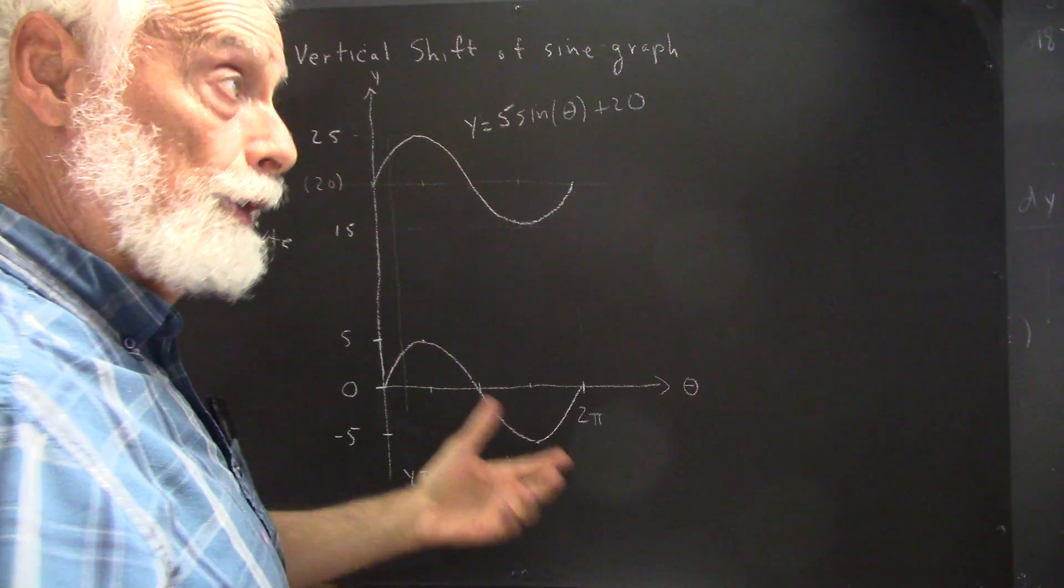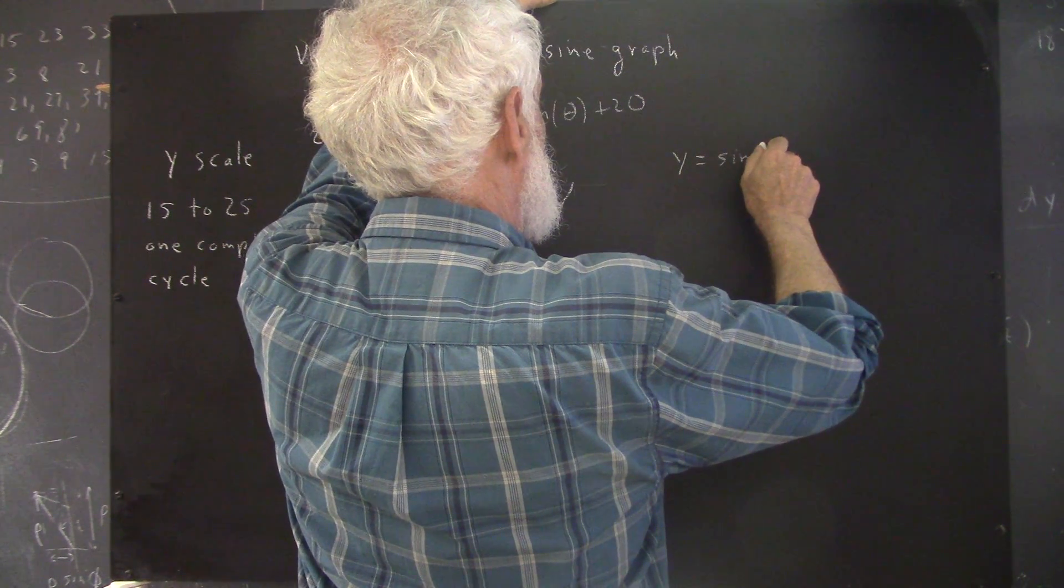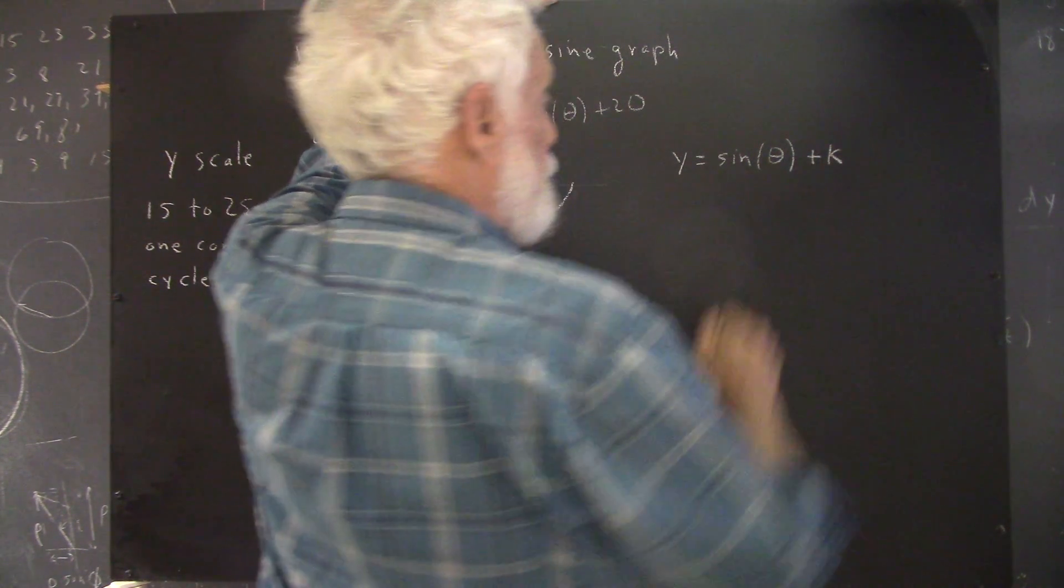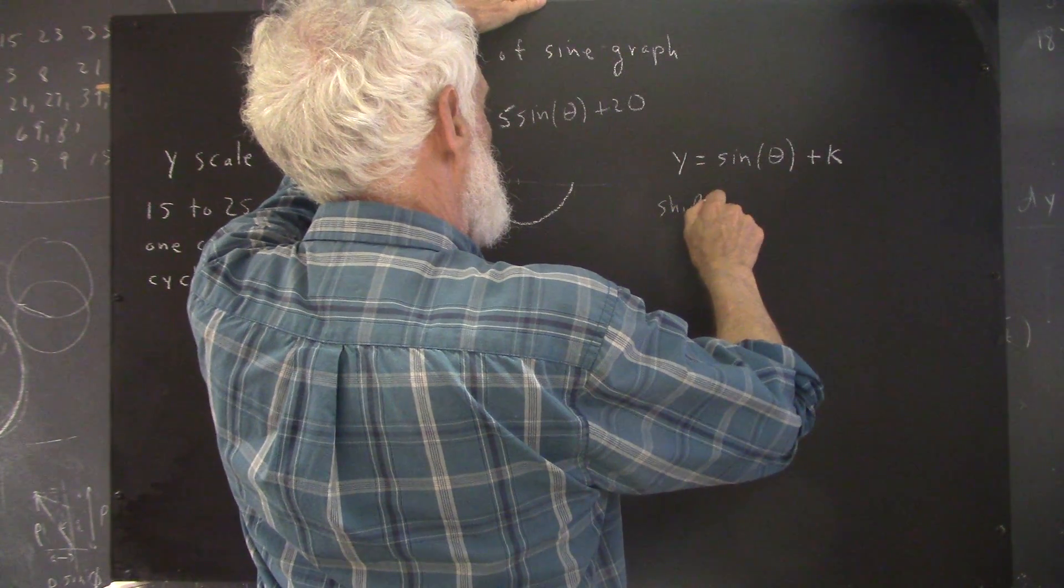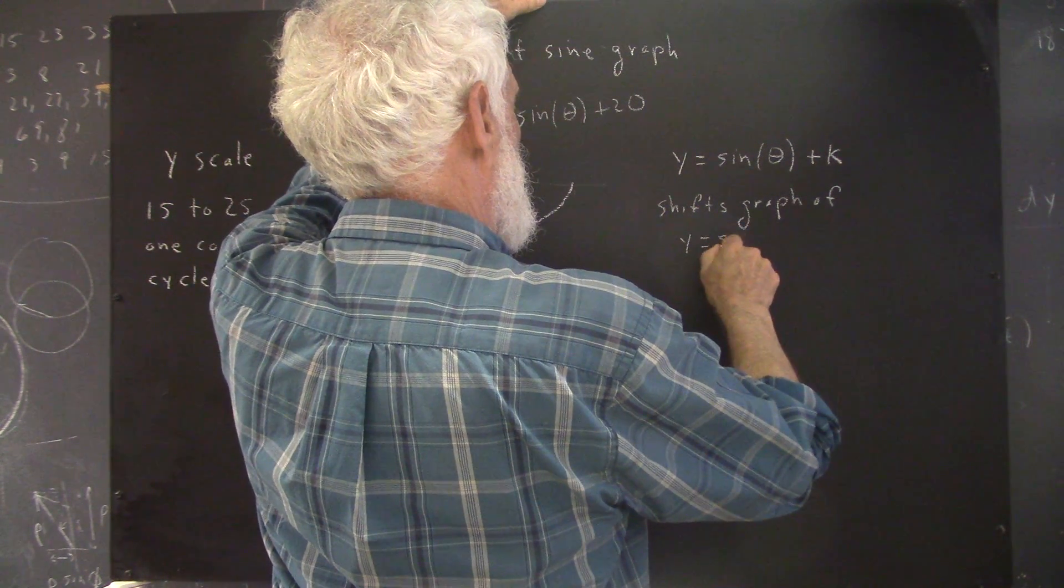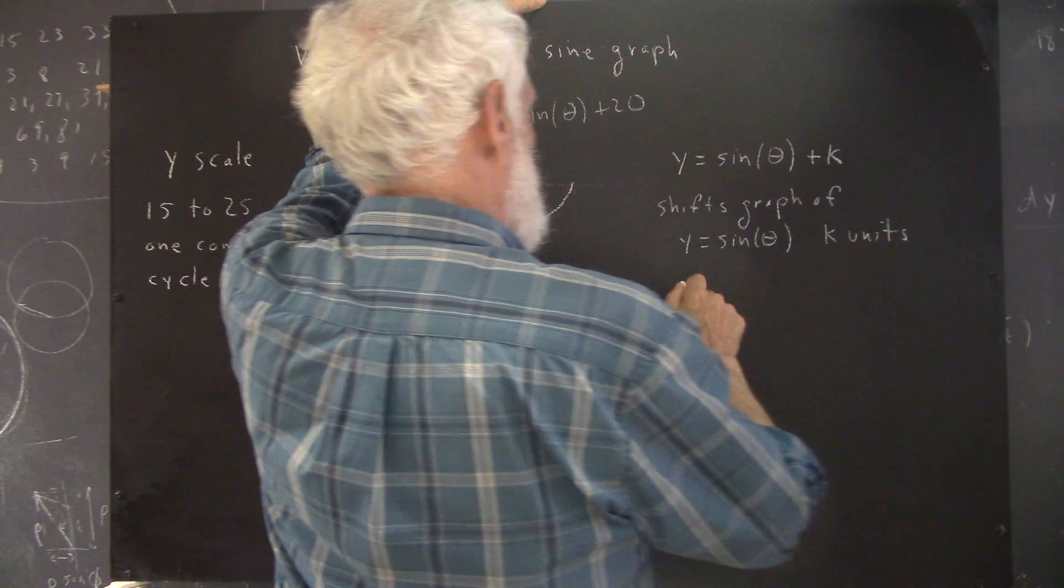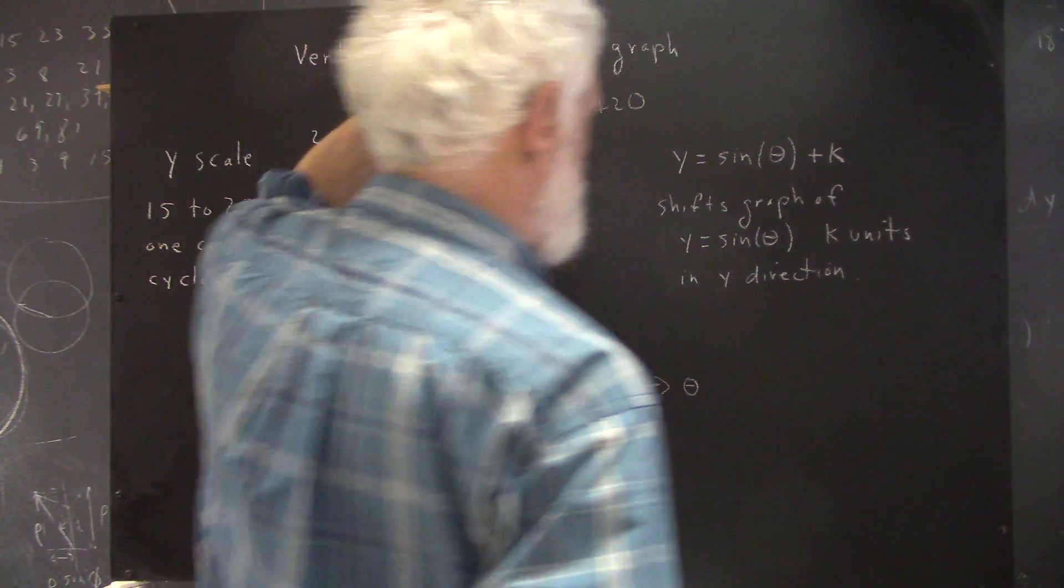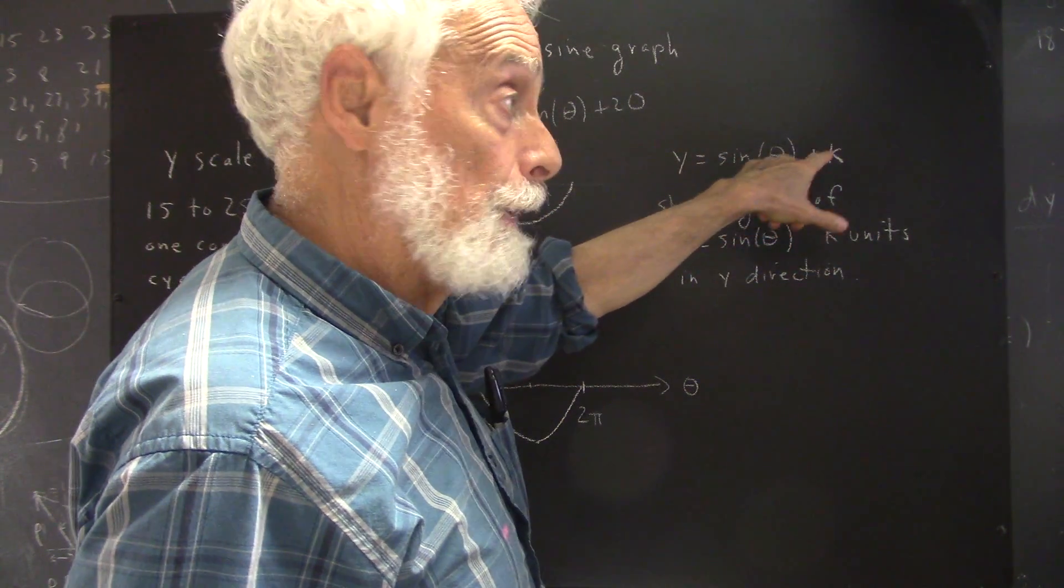So, this is how we vertically shift a graph of a sine function. So that y equals sine of theta plus k. Let's just do it like this. Graph of y equals sine of theta plus k. Shifts the graph of y equals sine of theta, k units in the y direction. And k could be a negative number.